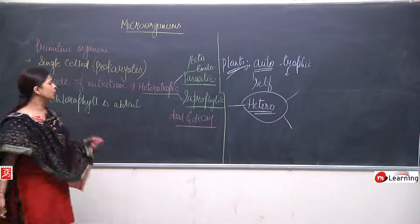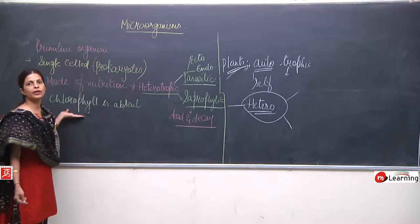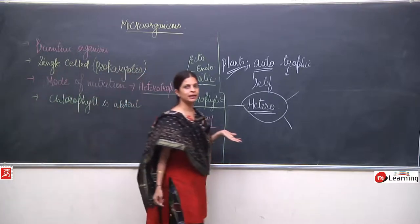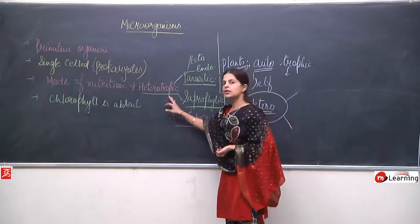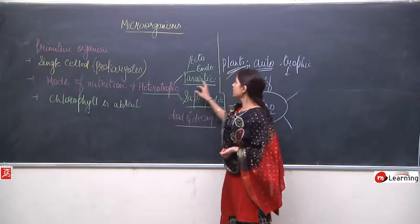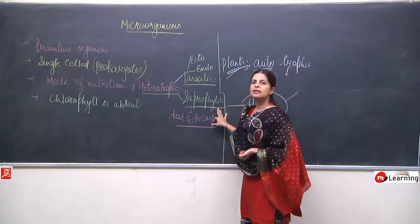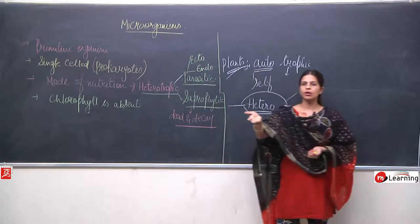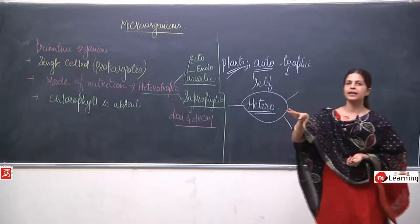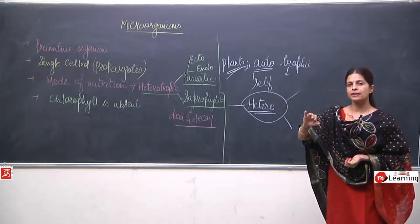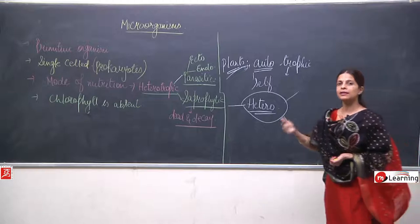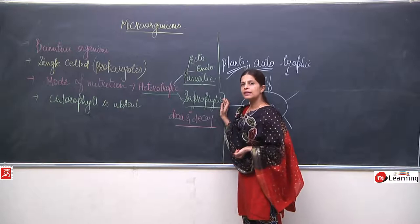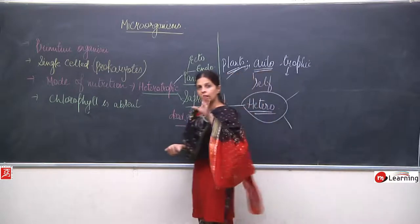Bacteria cannot prepare their own food because they do not have chlorophyll. The mode of nutrition of bacteria is heterotrophic — they can be parasitic or saprophytic. Parasites live in or on the body of another organism and suck their food. Saprophytes get their food from dead and decaying things.